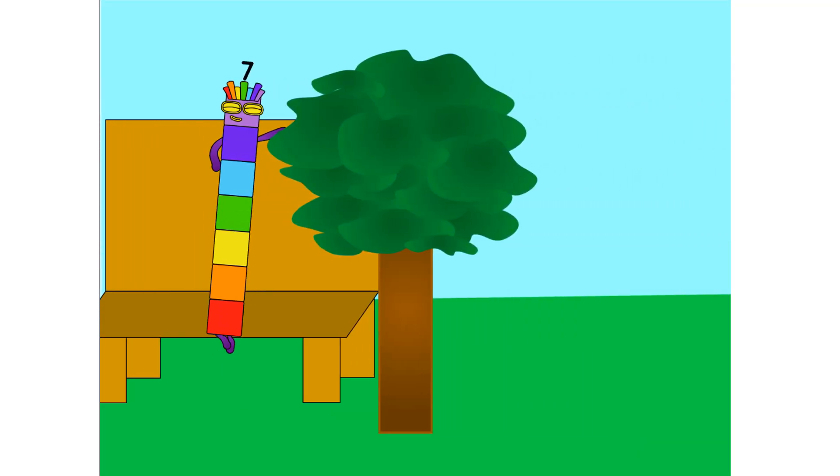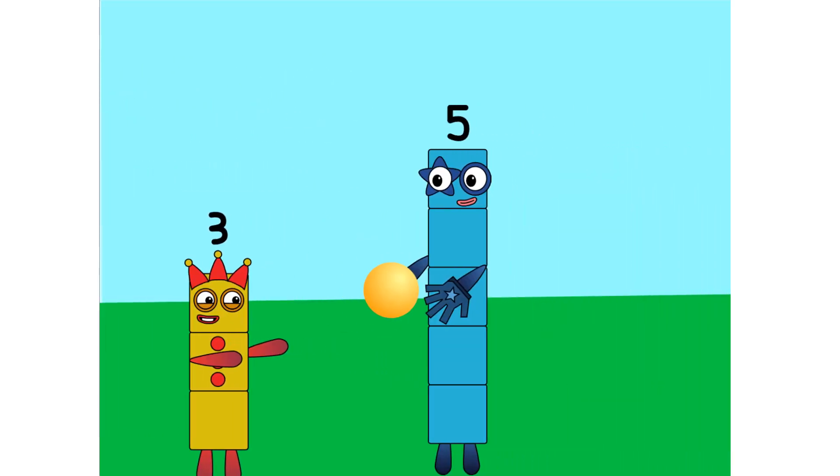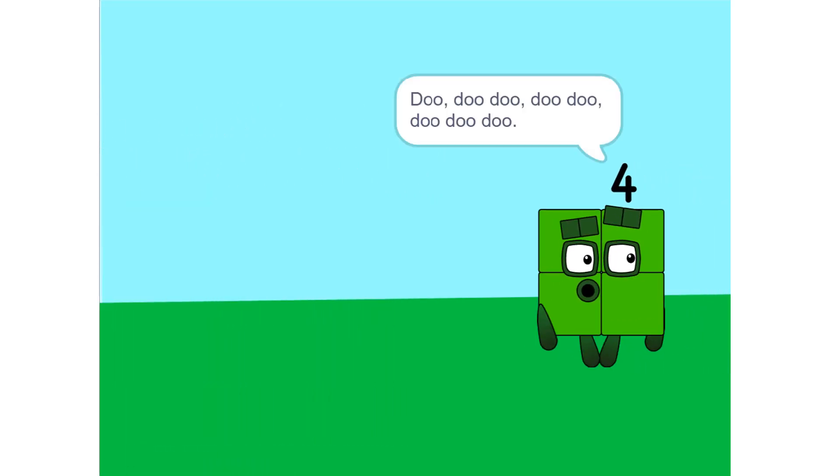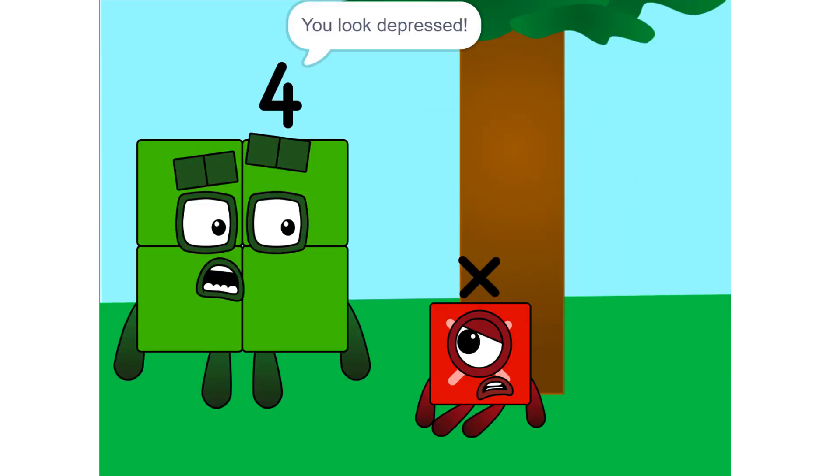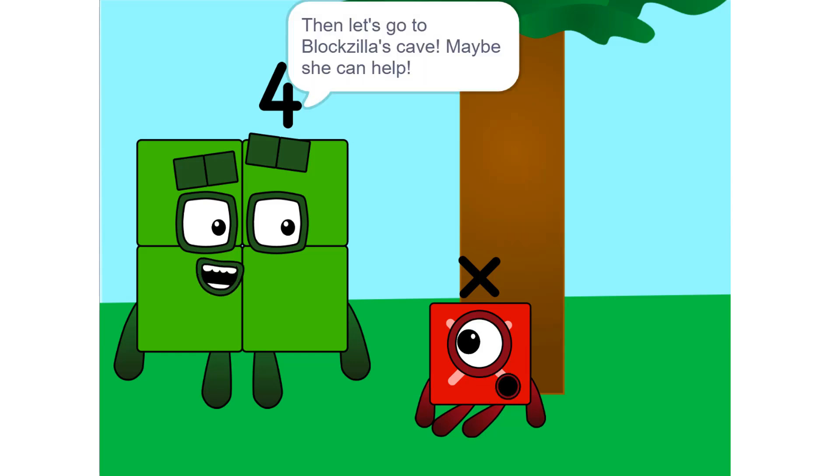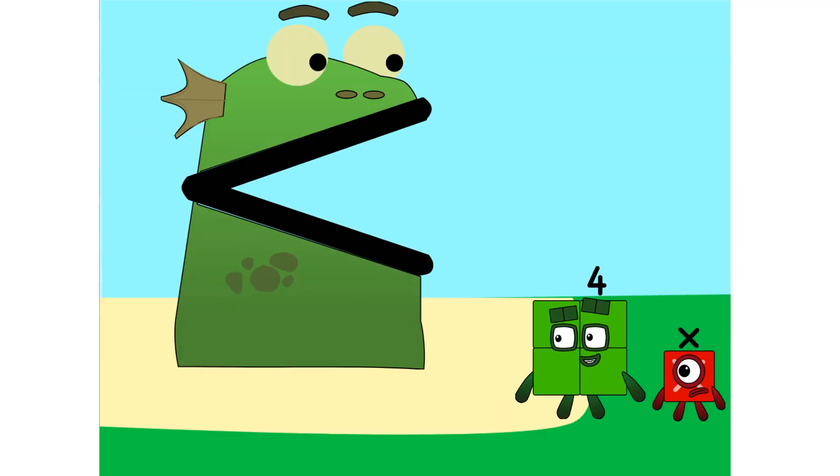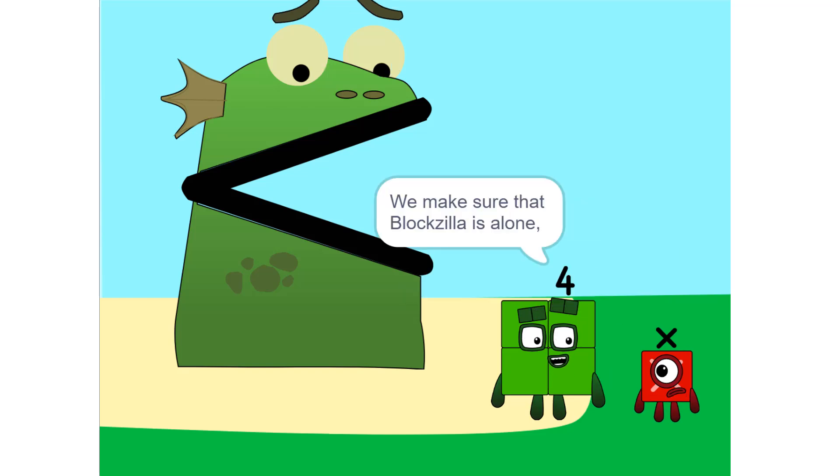Doo doo doo doo doo doo doo doo. X, what's wrong? You look depressed. Oh, I don't know. I just don't know what I am or what my value is. Then let's go to Bloxilla's cave. Maybe she can help. So this is Bloxilla's cave? Yeah. We make sure that Bloxilla is alone. Put you on one side.